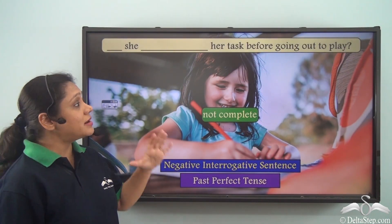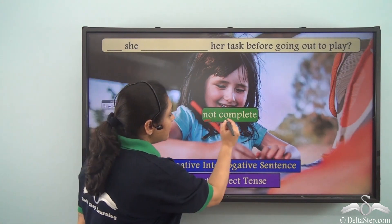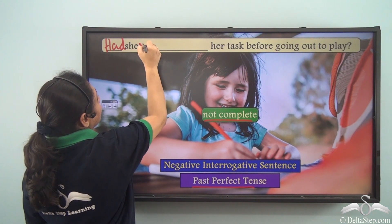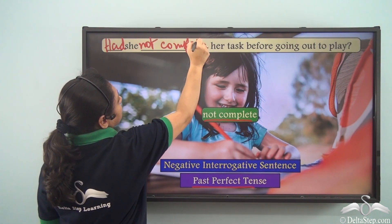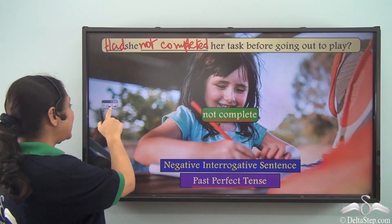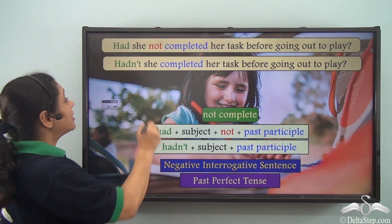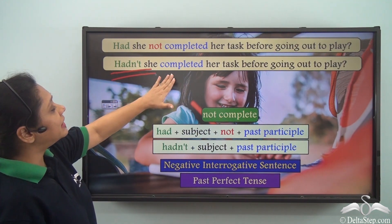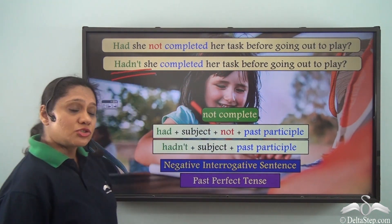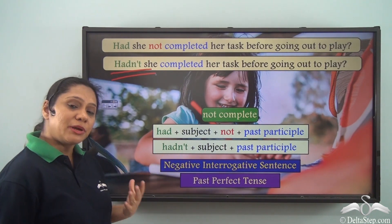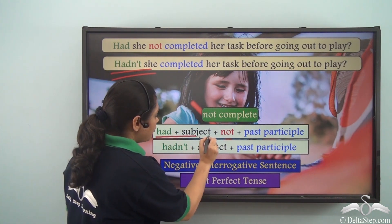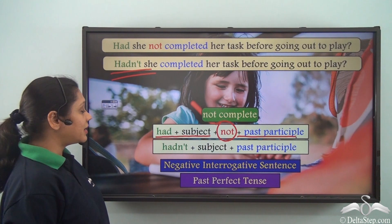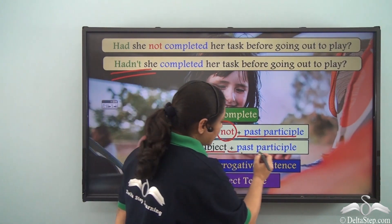How will we form a negative interrogative sentence using the verb 'not complete' to portray the past perfect tense? We will write: Had she not completed her task before going out to play? We can also write the contracted form: Hadn't she completed her task before going out to play? So the negative interrogative sentence in this tense can be written as 'had' followed by the subject followed by 'not' and the past participle, or 'hadn't' followed by the subject and the past participle.